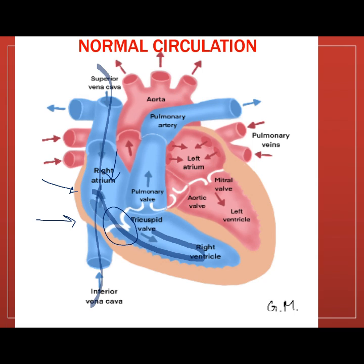Once the right ventricle is full, it starts the process of contraction, which then closes the tricuspid valve to prevent backflow of blood back to the right atrium.